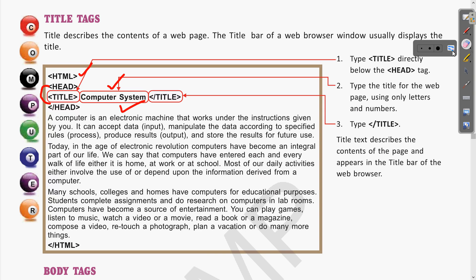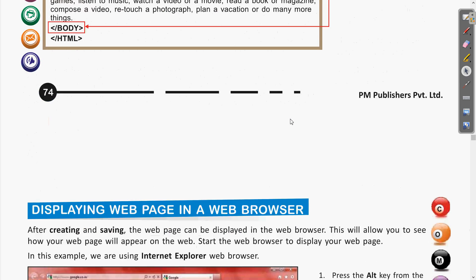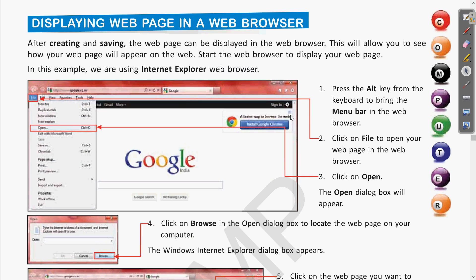After the head tag we write the body tag. The body tag is where the main content of the web page is written. Any text, paragraph, table, or images — all this is the main content and can be written within this body tag.